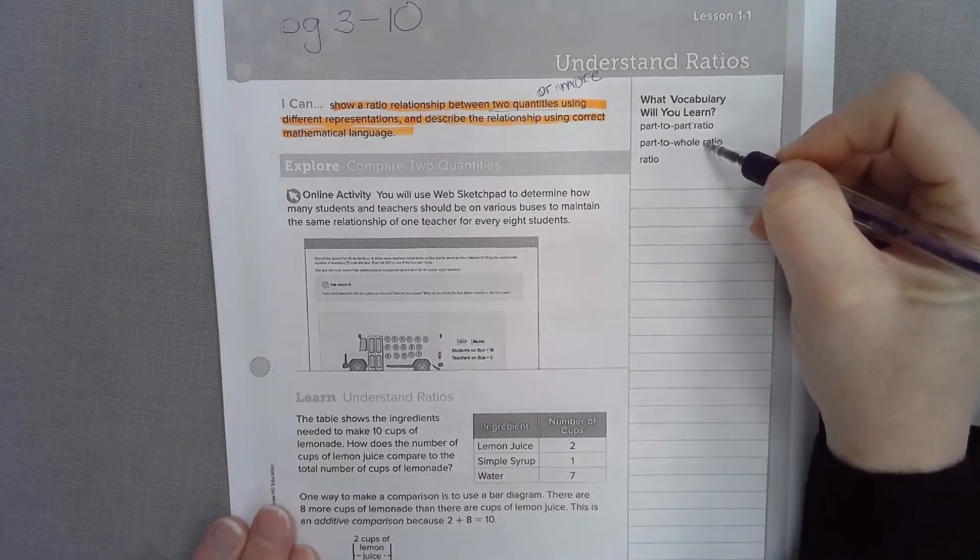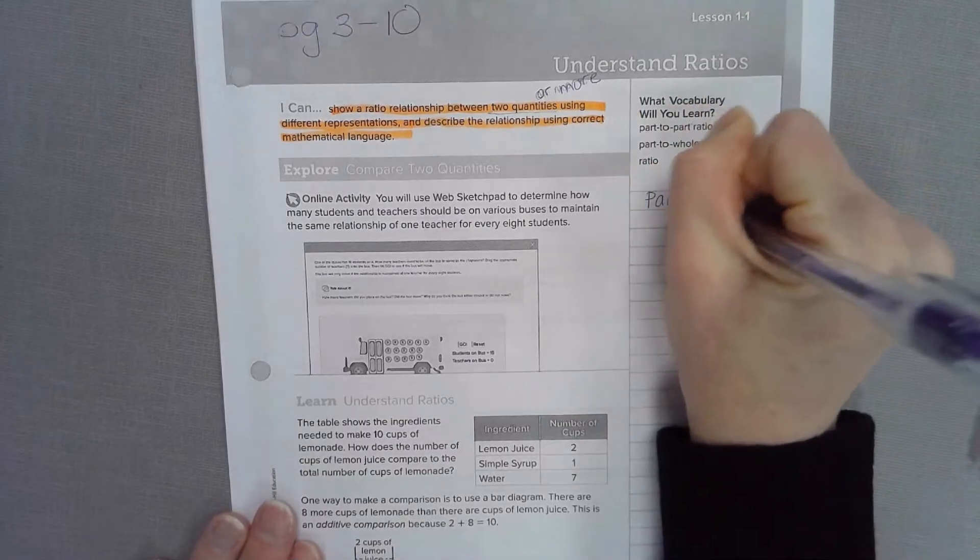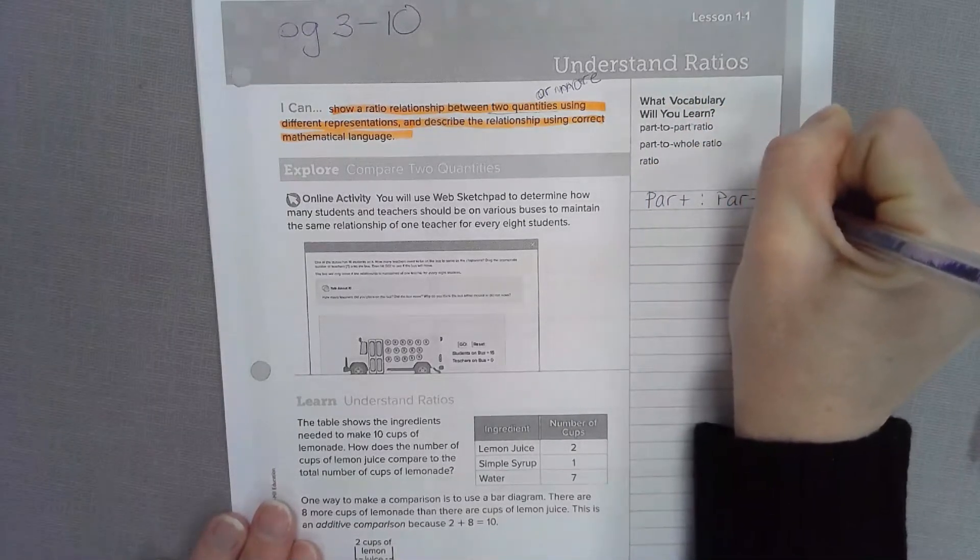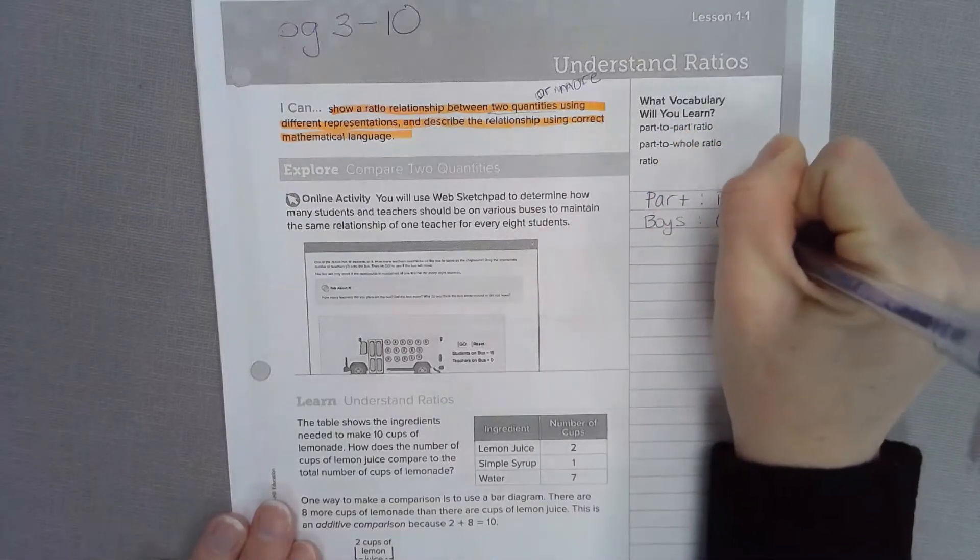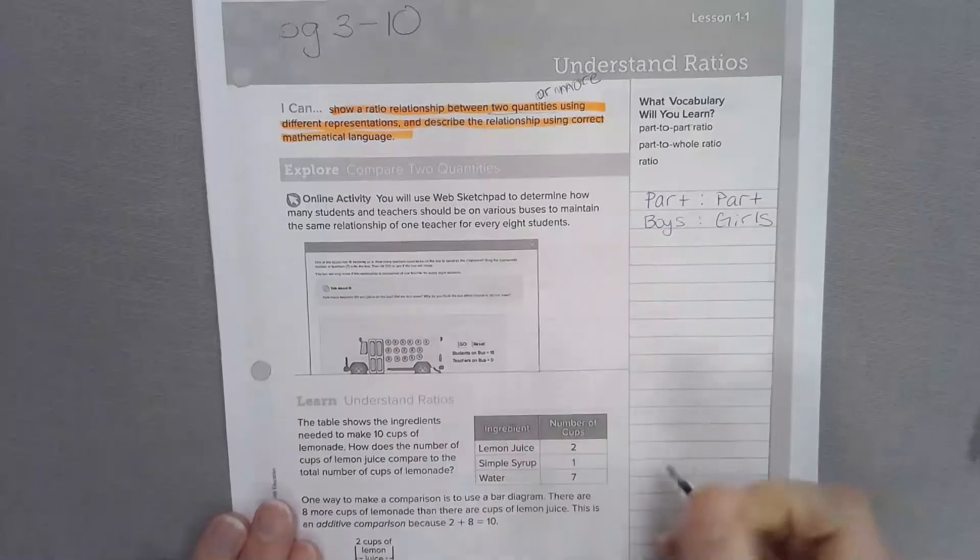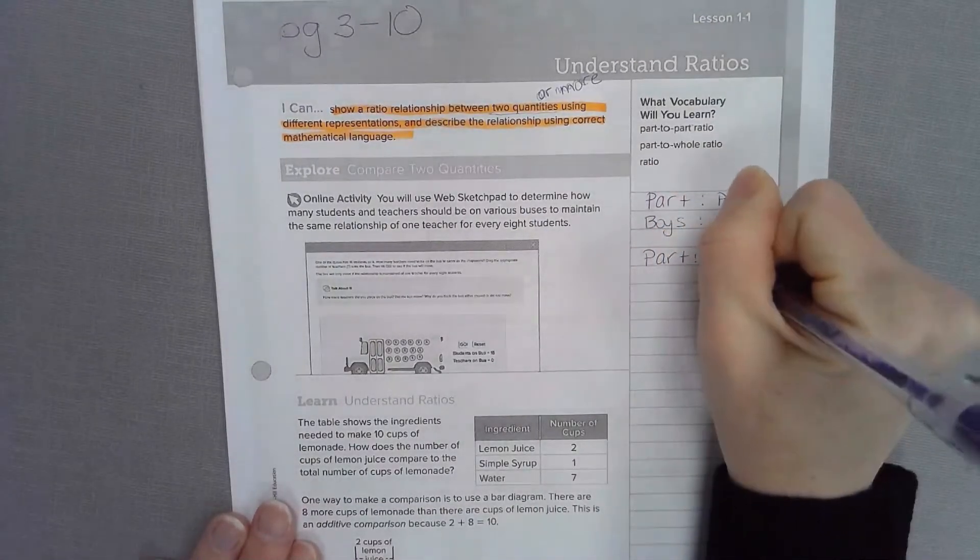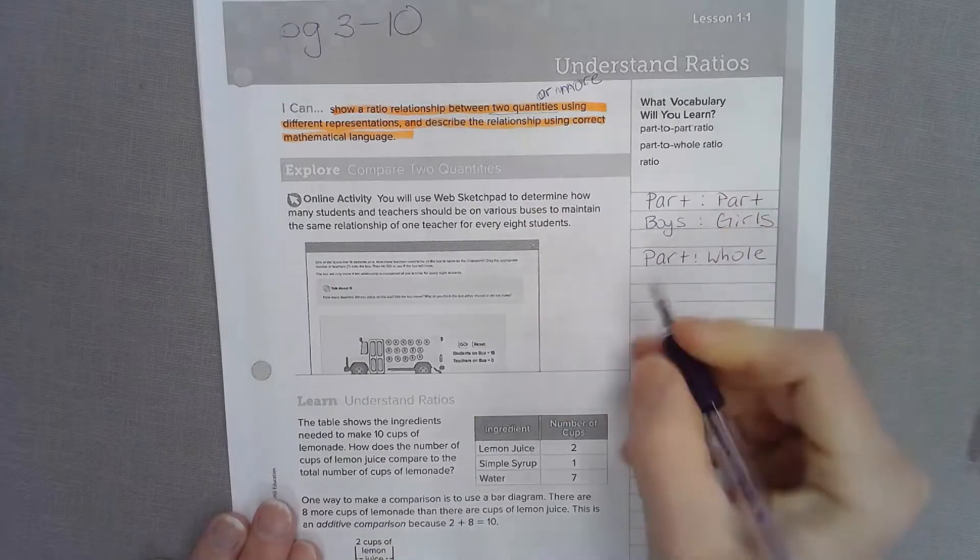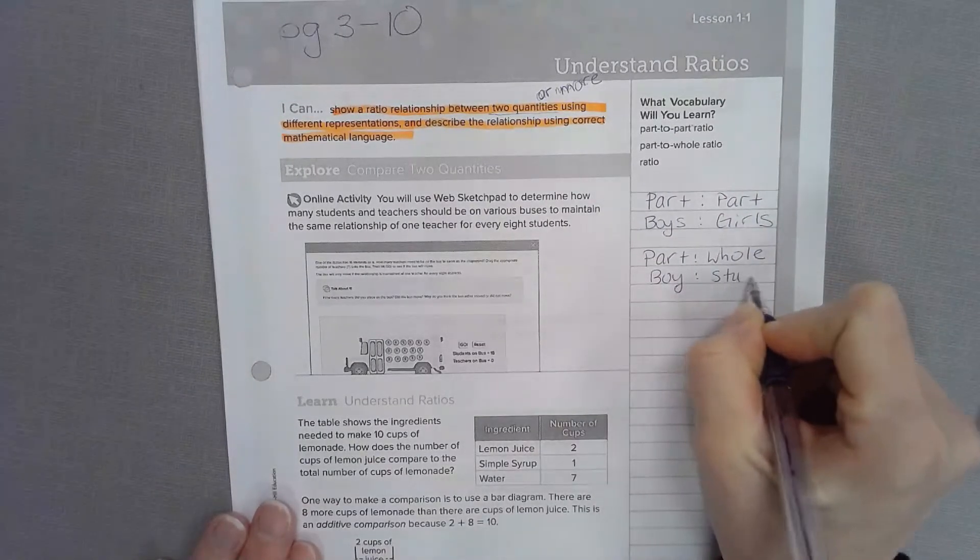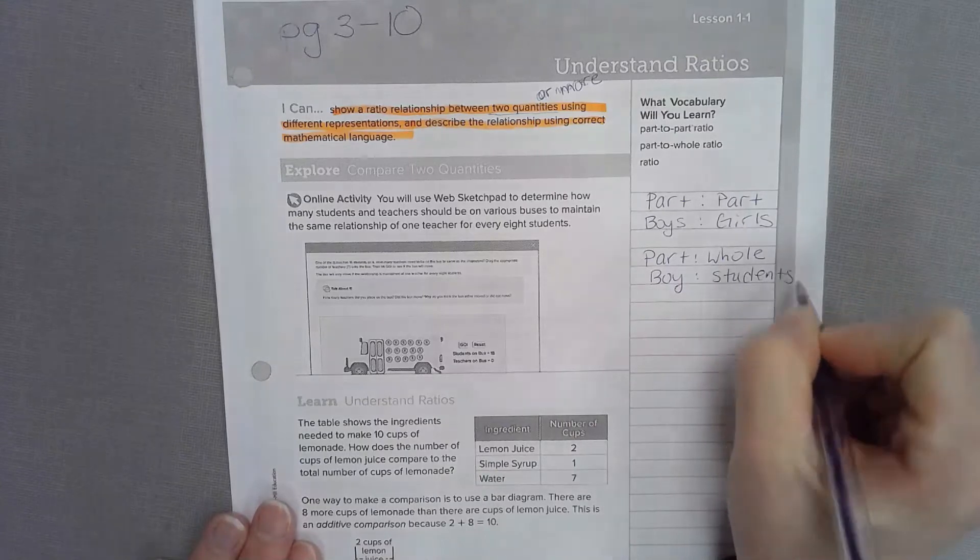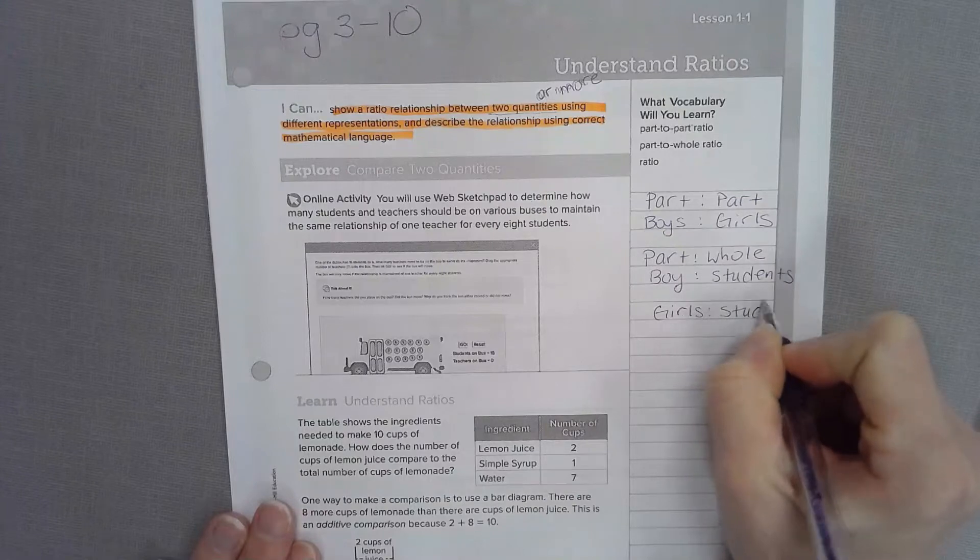Let's rewrite that with an example. A part to part relationship we discussed last week could compare boys to girls in the class. A part to whole relationship would be like comparing the boys to the total number of students or girls to the total number of students in the class.